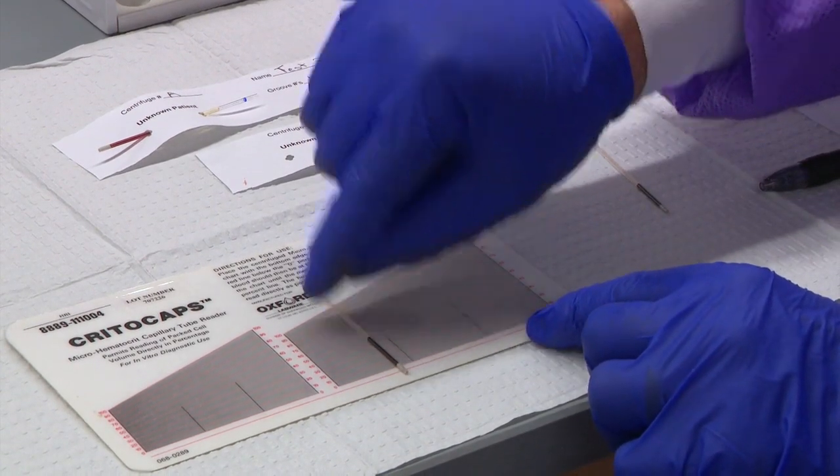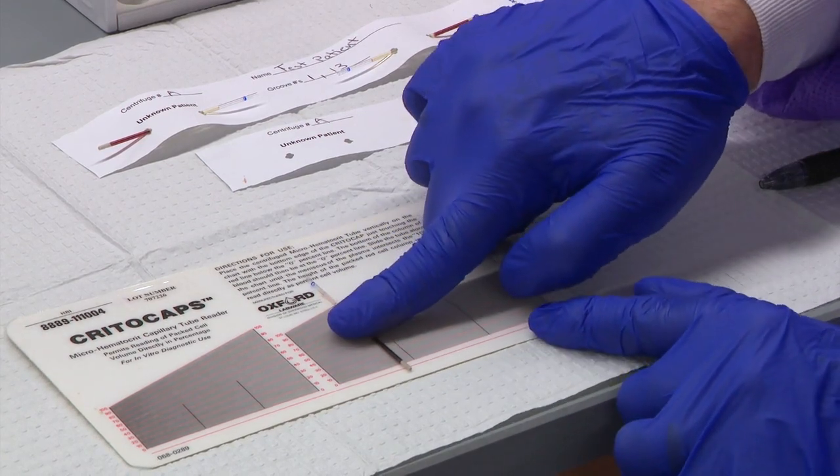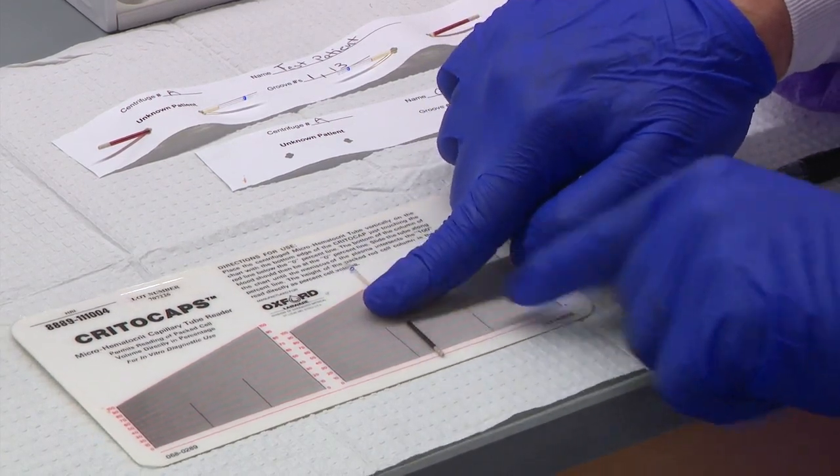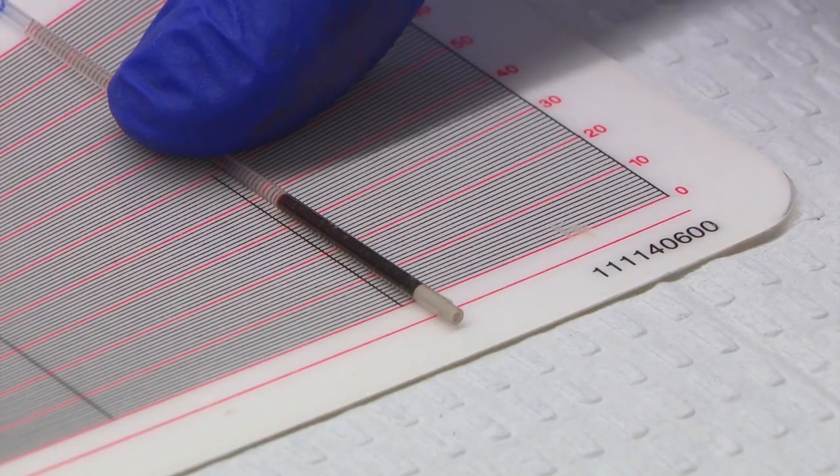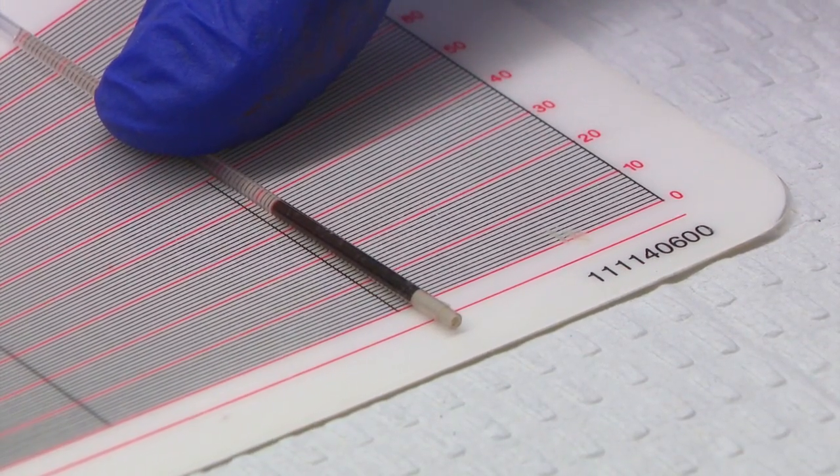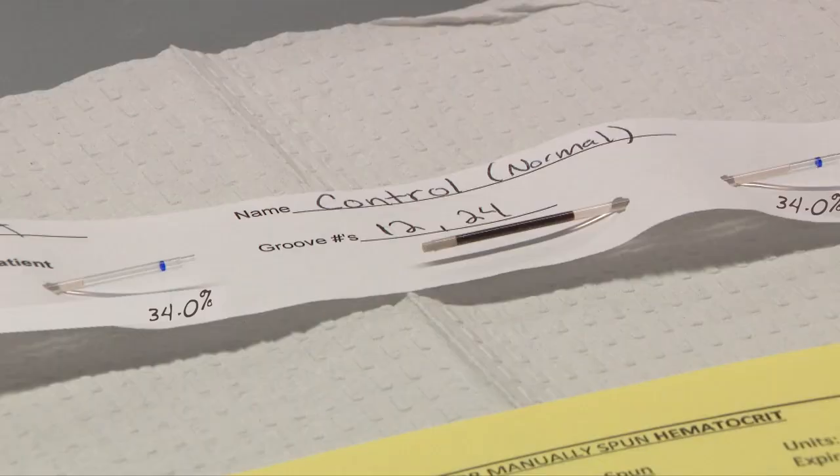We are going to read both control hematocrit tubes and in order to accept the results, the values must agree within plus or minus 1 percent. The 1 percent equals one hematocrit percentage point. Our first control tube is 34.0 percent and our second control tube value is also 34.0 percent. Since they agree within 1 percent of each other, we can accept those results.